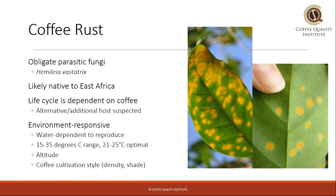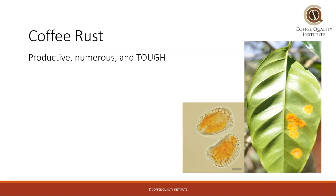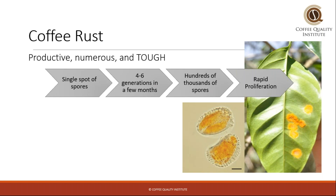Coffee rust is very environment-responsive — it needs free water to reproduce and has a very specific temperature range it prefers. It is impacted by altitude and also by the microclimate created by cultivation style, meaning how densely rows are planted or what type and percentage of shade is involved. The real challenge is that it's incredibly productive: a very small single spot of spores can grow four to six new generations in just a few months, meaning hundreds of thousands of spores. These spores, visible under a microscope, are very, very tough — it's even believed they can exist on the outside of airplanes traveling cross-continentally.